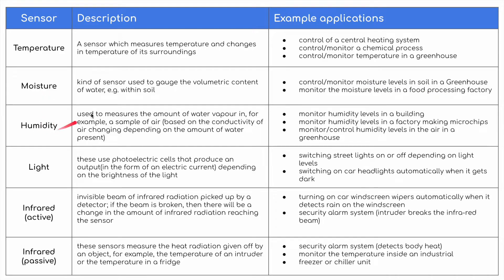Similarly, we have a humidity sensor, used to measure the amount of water vapour in, for example, a sample of air, based on the conductivity of air changing depending on the amount of water present. It can be used to monitor humidity levels in a building, monitor humidity levels in a factory making microchips, or monitor and control humidity in a greenhouse.